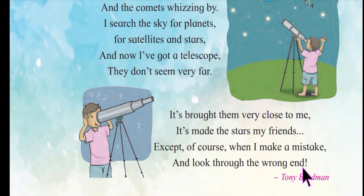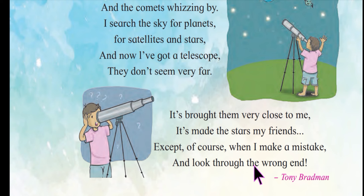Except of course when I make a mistake and look through the wrong end. 'Except' means apart from this one problem — if he looks through the wrong end of the telescope, things will appear even farther away instead of closer. So if you don't hold the telescope properly, it shows things far instead of near. That is the mistake he should not make.